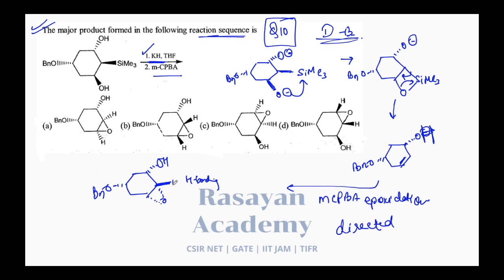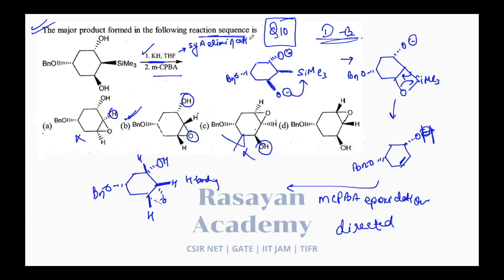What is directed epoxidation? The existing allylic OH group directs the incoming epoxidizing oxygen to the same side as itself through hydrogen bonding with mCPBA. So the epoxide forms on the same side as the OH. The hydrogens are above and the oxygen is below. Option B is the correct answer. A is wrong because the hydrogens cannot be below. For Peterson elimination in basic medium, syn-elimination occurs — anti-elimination does not happen. B is the correct answer.